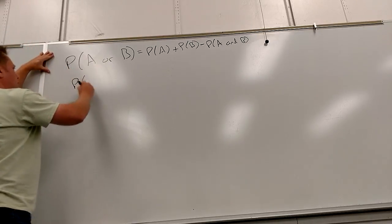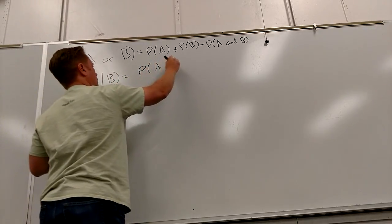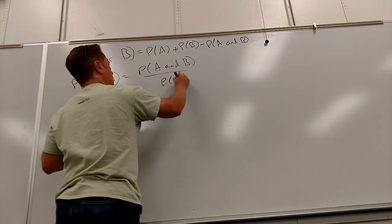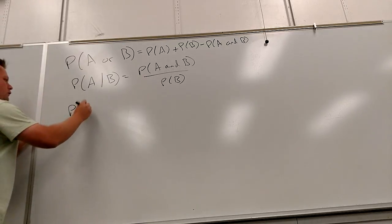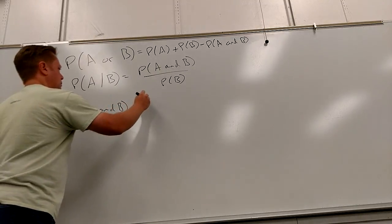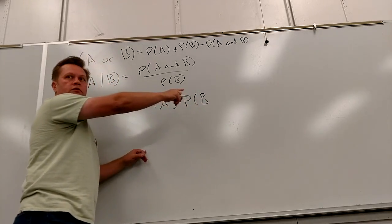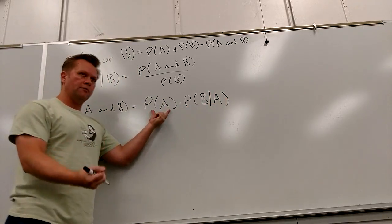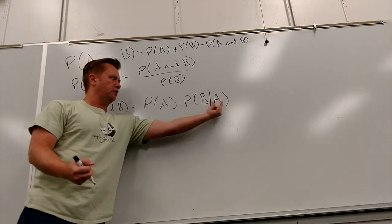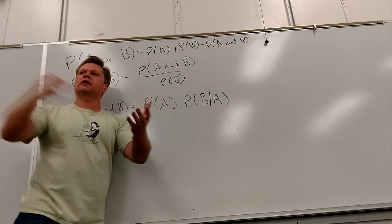And then we go: probability of A given B. Through this and some other things we did, we discovered that the formula for P(A and B) can actually be written in two different ways. So probability of A is basically multiply these two things, but you have to adjust the second one — probability of A happening and then B happening, given that A already happened. So if I do without-replacement cards, this is going to adjust a little bit because I've got one less card.